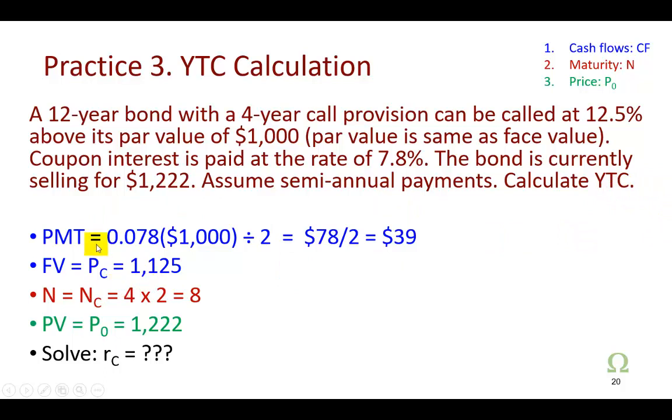And with semi-annual coupon payments, we can definitely calculate the yield to call, which I've laid out here. Again, the payment is going to come out to be $39, which is 7.8% of $1,000 divided by 2. The future value, which is the call price we're told here, is going to be that it can be called at 12.5% above its par value of $1,000. So 12.5% of $1,000 is $125. Added to this $1,000 gives you a total call price of $1,125.